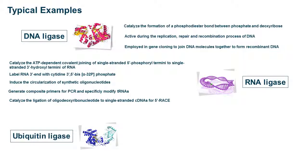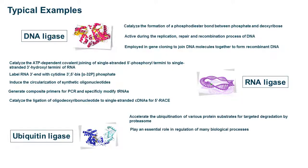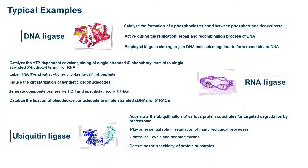Ubiquitin Ligase accelerates the ubiquitination of various protein substrates for targeted degradation by the proteasome. It plays an essential role in the regulation of many biological processes, controls the cell cycle and degrades cyclins, determines the specificity of protein substrates, and is a class of attractive druggable targets for pharmaceutical intervention.